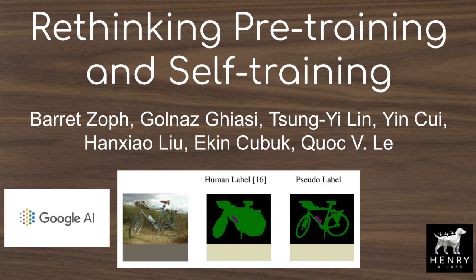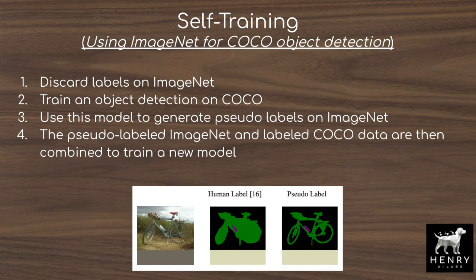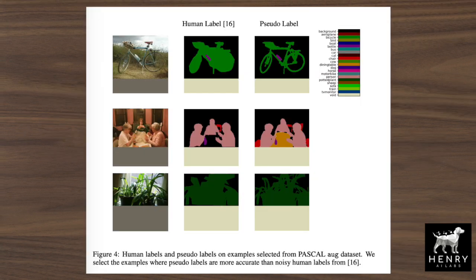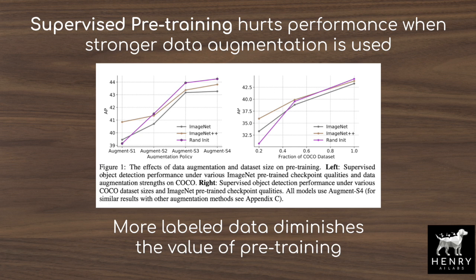This video explores a new paper from researchers at Google AI that compares supervised pre-training, self-supervised pre-training, and self-training. Self-training is a new paradigm that achieved state-of-the-art in ImageNet classification with the Noisy Student paper. Self-training works by first training a model on the labeled dataset, then using that model to label an unlabeled dataset, producing pseudo-labels, then combining these datasets to train a new model, and continuing this process until desired performance is achieved. The unlabeled dataset is usually much larger than the labeled dataset.